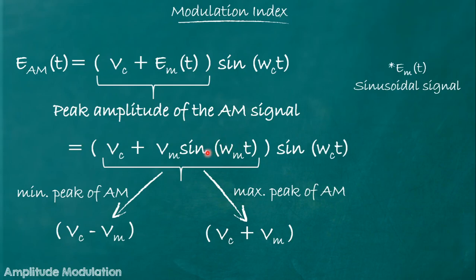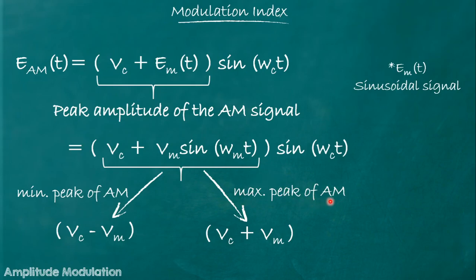Let us estimate the minimum value of the bracket term. When sin = −1, the bracket becomes vc + vm×(−1) = vc − vm. So the minimum value attained by the bracket is vc − vm, called the minimum peak of the AM signal. Similarly, when sin = +1, the bracket becomes vc + vm×1 = vc + vm, which is the maximum value attained by the peak of the AM signal.